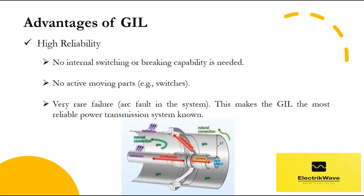GIL has high reliability. The only purpose of the GIL is electric power transmission — no internal switching or breaking capability is needed. Based on this, the GIL can be seen as a passive high voltage gas insulated system with no active moving parts such as switches. Today, more than thousands of kilometers of single phase lengths have been in operation worldwide for more than 45 years. Very rare failures — arc faults in the system — have been observed, making the GIL the most reliable power transmission system known.